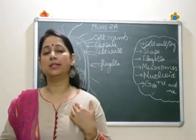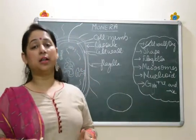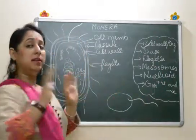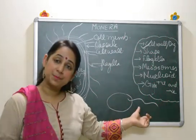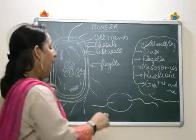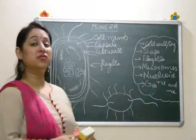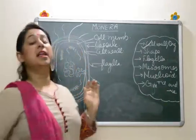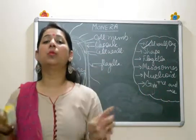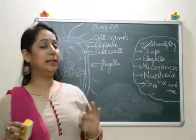There are categories of bacteria based on their flagella. If a bacterium does not have any flagellum, it is known as atrichous. If it has flagella on only one end, it is known as lophotrichous. If it has flagella on both ends, it is known as amphitrichous. And if it has flagella scattered all over its body, it is known as peritrichous. So: no flagella — atrichous; one end — lophotrichous; both ends — amphitrichous; all over — peritrichous.